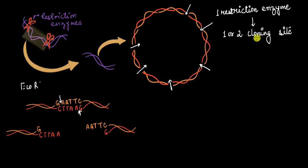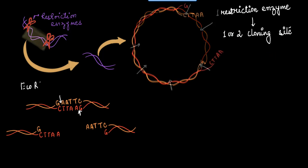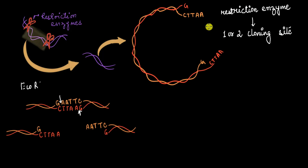We call these cloning sites because we insert the gene we want to clone inside of them. We also call them restriction sites because we cut them with restriction enzymes, and recognition sites because these are the sites where we find the sequence that can be recognized by the restriction enzyme. Now that we have cut our vector with EcoR1, the vector will open up and will have overhangs or sticky ends. These sticky ends can bind to each other to reform the circular plasmid, or they can stick to any piece of DNA that has complementary base pairs matching the overhangs.